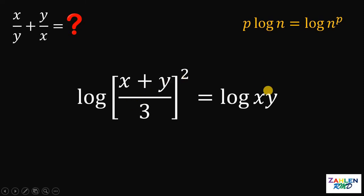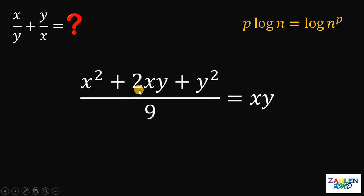Now, by equality, we can say that x plus y over 3 raised to 2 must be equal to xy. Now, let's simplify. x plus y over 3 quantity squared is equivalent to x squared plus 2xy plus y squared all over 9.